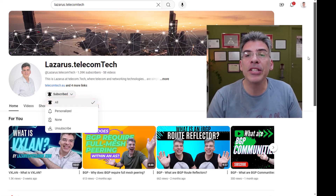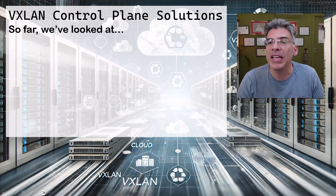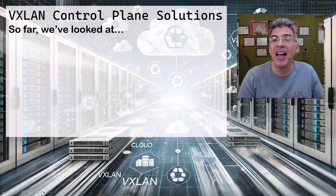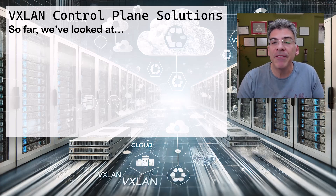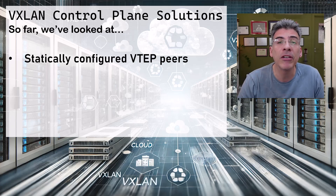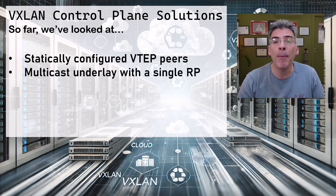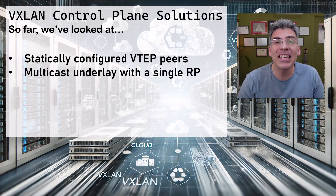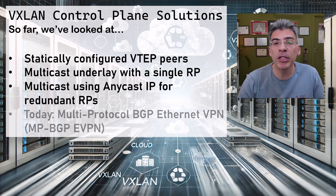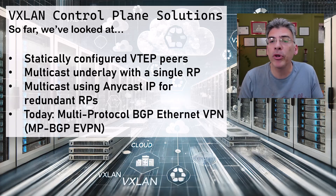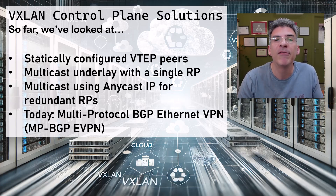So far in my series on VXLAN, we went over the various ways in which you can deploy the control plane, such that VXLAN is able to find the remote VTEP on which the intended destination host resides. We took a look at various solutions, including statically configured VTEP peers, using a simple multicast underlay with a single rendezvous point, as well as using multicast with anycast IPs for redundant rendezvous points. Today, we'll be looking at the solution that uses the multi-protocol BGP Ethernet VPN, or MPBGP EVPN control plane for VXLAN.